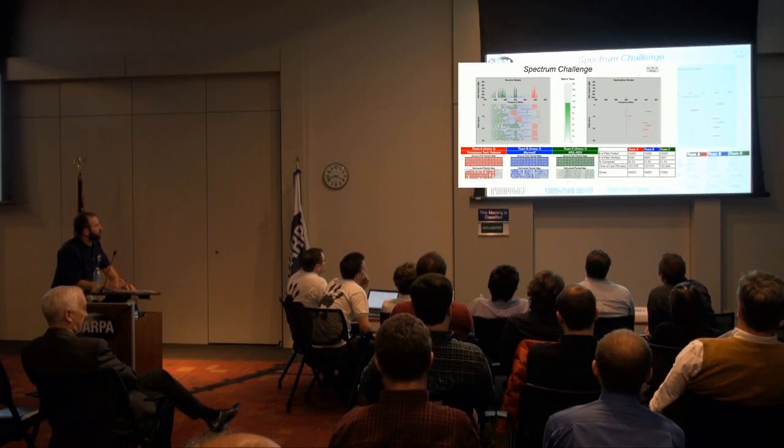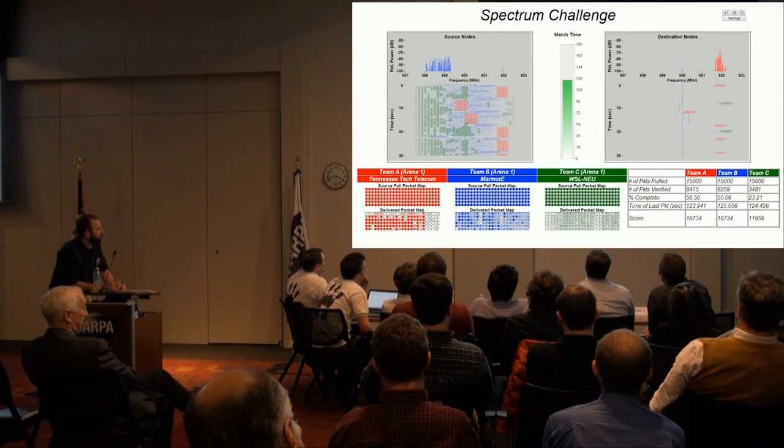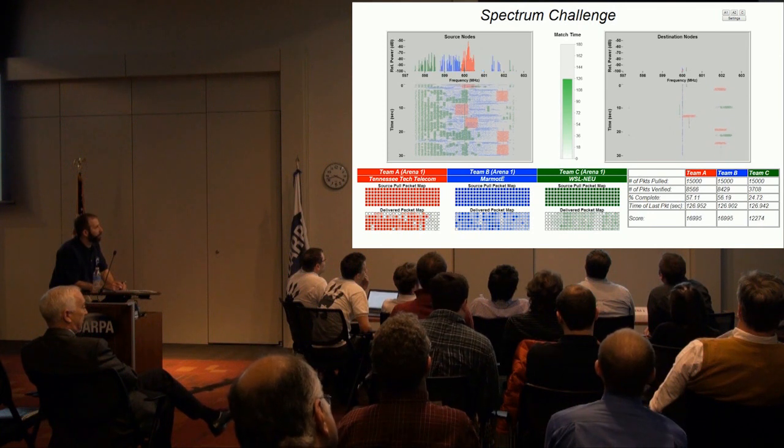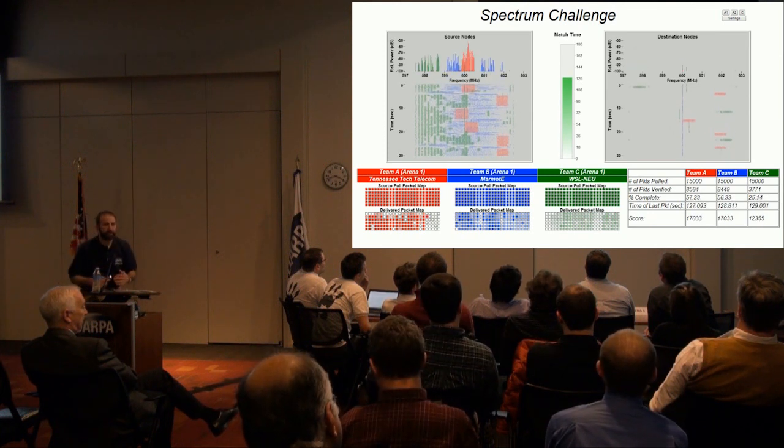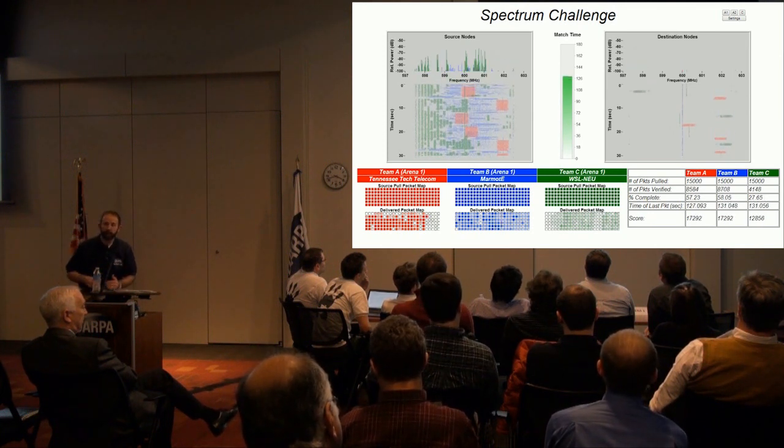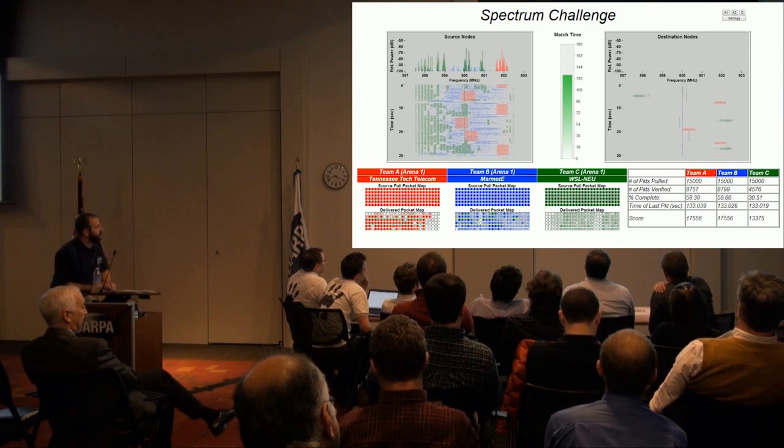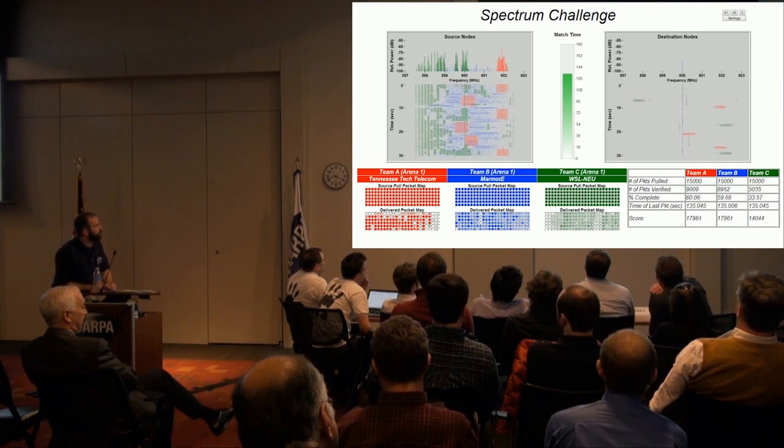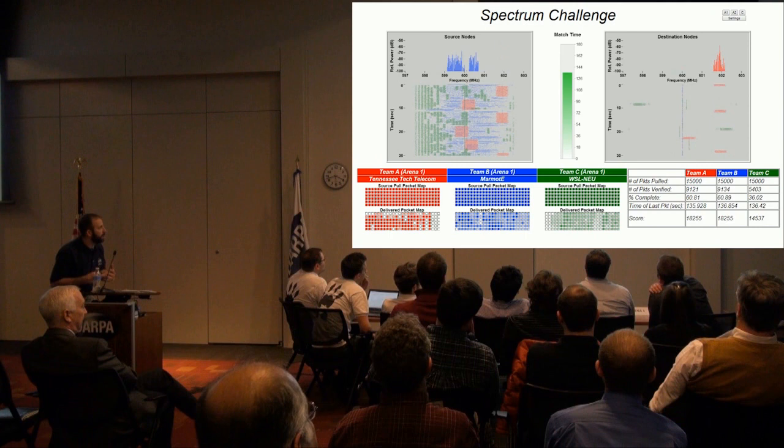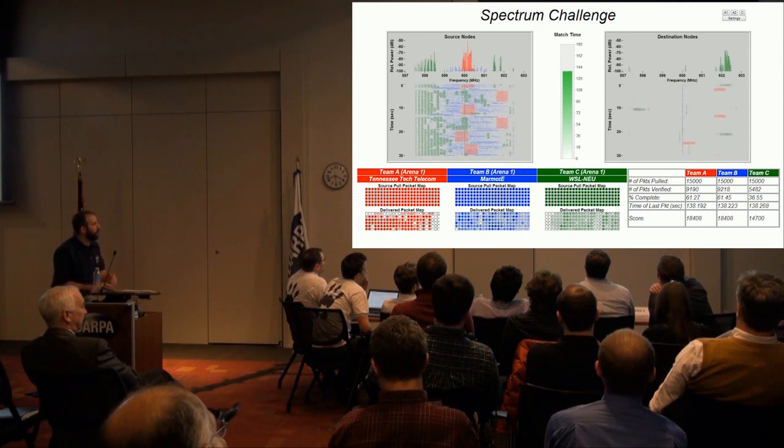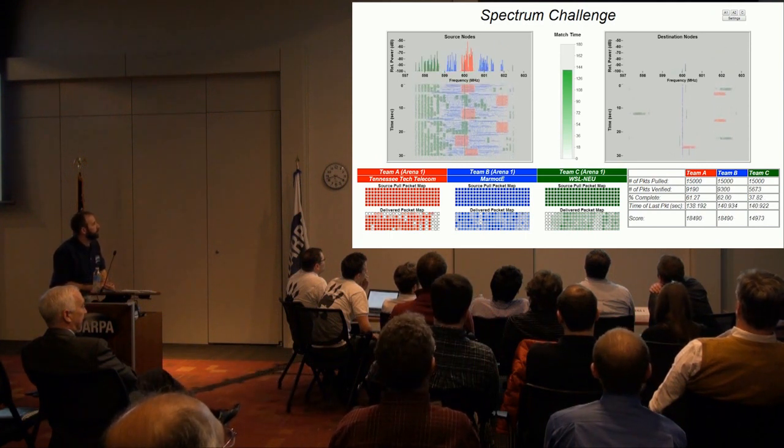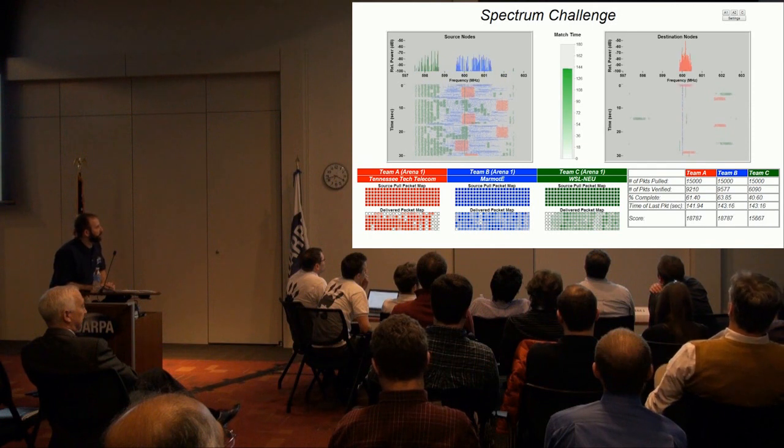And so we continue to see that Marmot E and Tennessee Tech are getting roughly the same packet count. This is what we want to see. We want to see teams equitably sharing the spectrum in a dynamic fashion, not requiring any coordination, being able to operate in many different environments with many different scenarios. This increases the robustness of this communication.